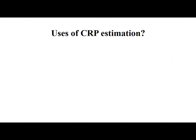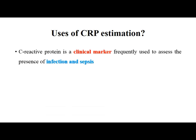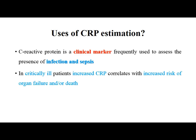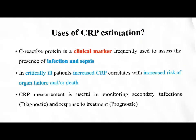CRP is a clinical marker frequently used to assess the presence of infection and sepsis. Among critically ill patients, increased CRP correlates with the increased risk of organ failure and death, making it a good indicator for ICU patients. CRP is a good marker for monitoring secondary infections over existing primary infections, and it helps in the assessment of responses to treatment. Hence, CRP can be used both as a diagnostic and prognostic test.